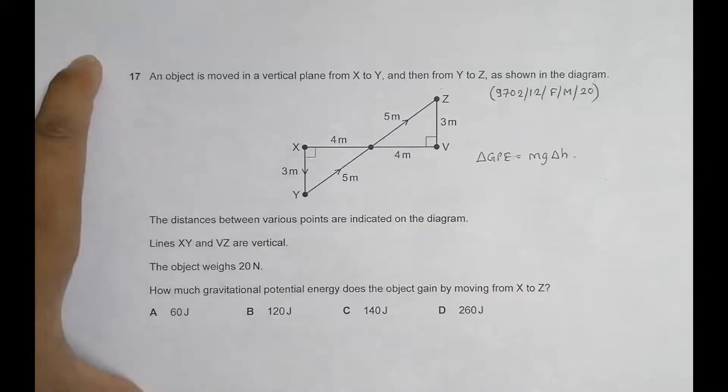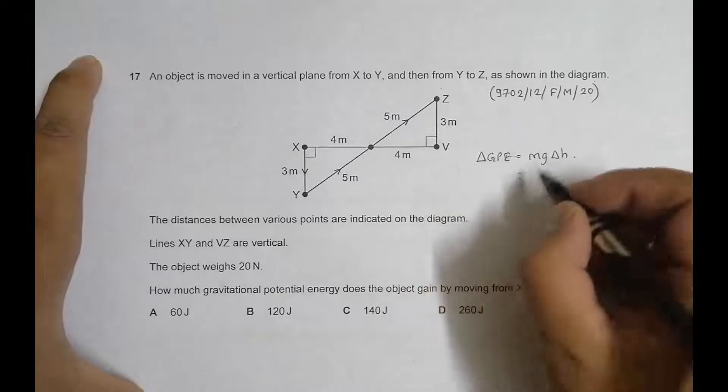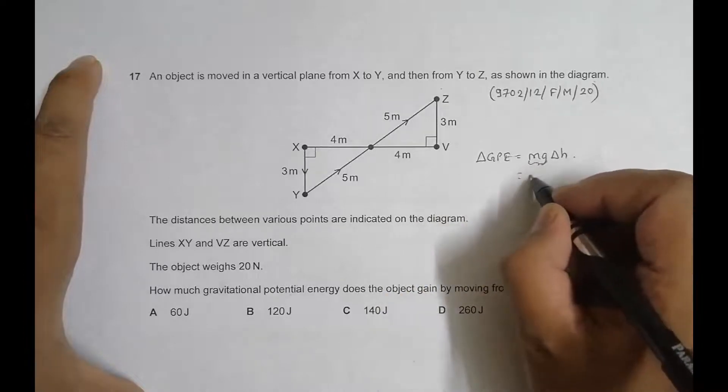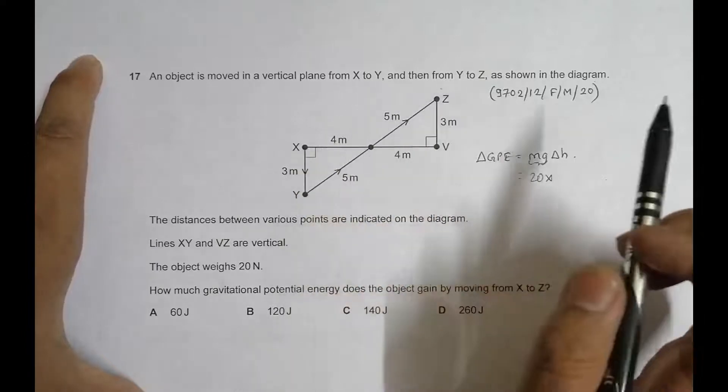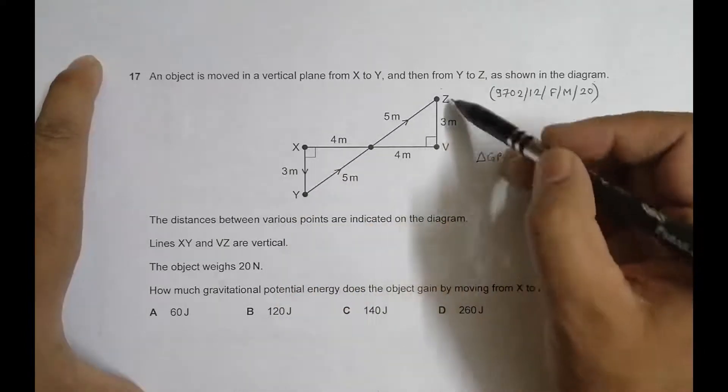So what is the change in height? That's equal to mg, which is equal to 20. So this whole thing is equal to 20 into the change in height from X to Z.